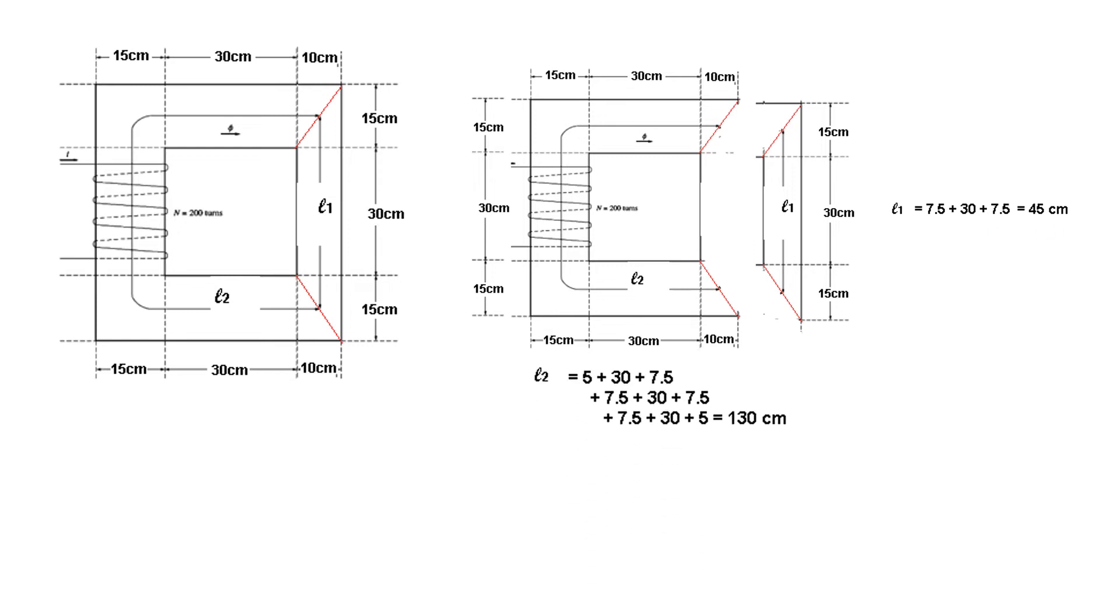And similarly, L2, if we start from here half of 10, so 5, then 30, then half of 15, 7.5, 30, and half of 15, 7.5. And then the bottom line, again, half of 15, 7.5, 30, and half of 5. Remember, this is 10, so half of 10 is 5. And so the L2 is 130.